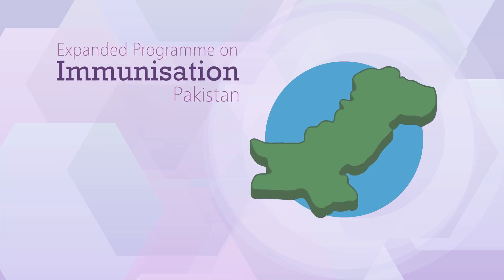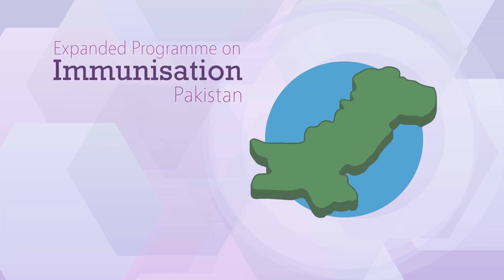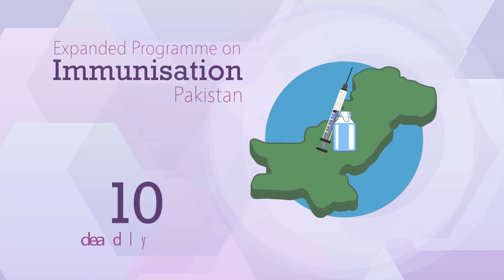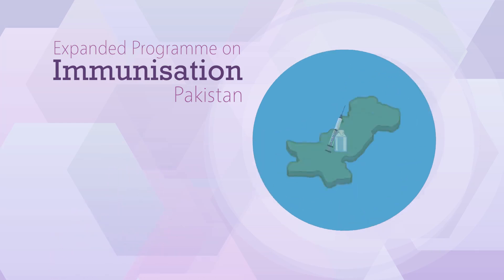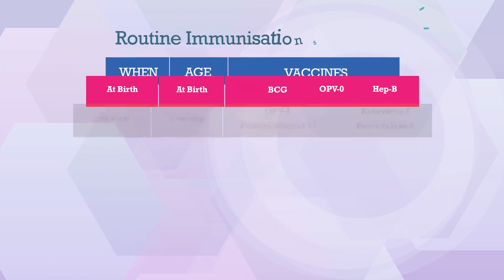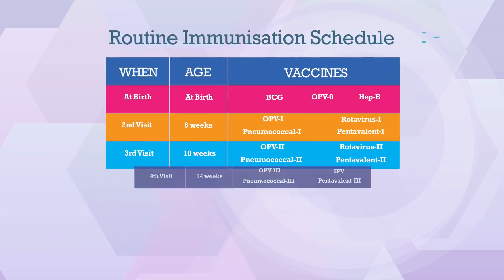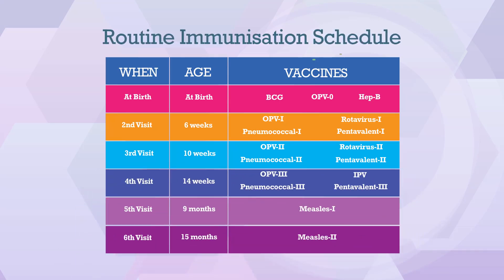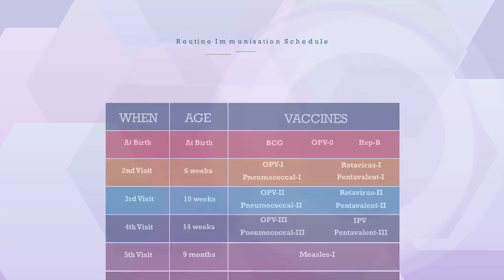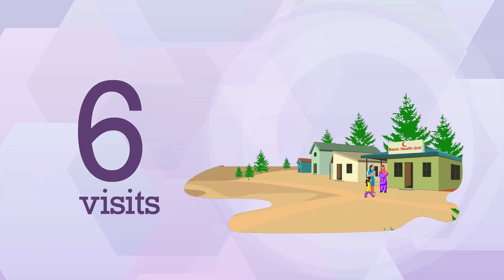The expanded program on immunization Pakistan provides free vaccines for children to protect them from 10 deadly vaccine-preventable diseases. To administer these free vaccines, EPI has developed an immunization schedule for children from birth till 15 months of age, which includes six visits to a public health facility.